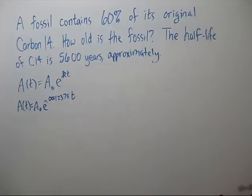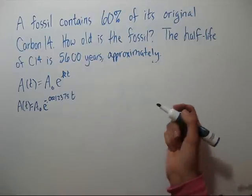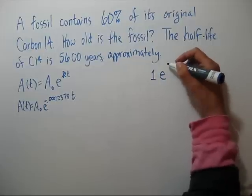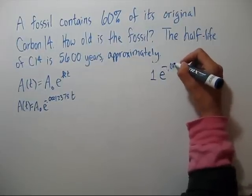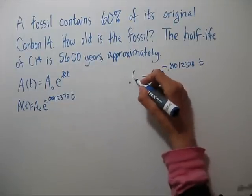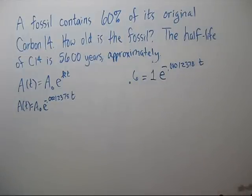It doesn't give us amounts, but we can use that 60%. We start out with 100%, which is 1. So we can just let A-naught be 1. And we want to find t. And our ending amount is 60%, so that's .6. Now go ahead and solve for t.